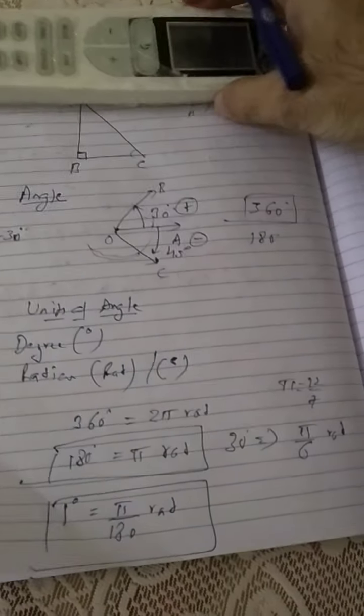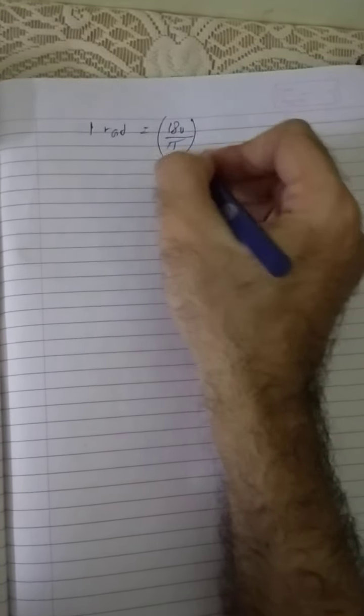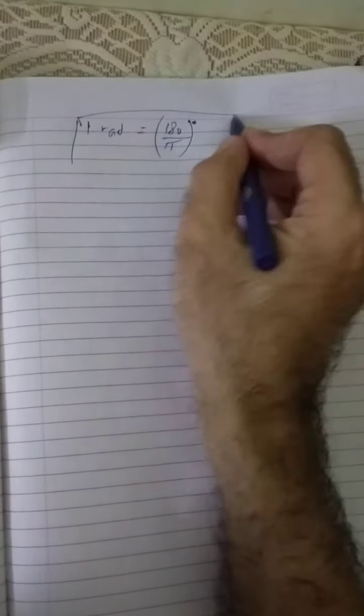Similarly, if you have radian to degree, so 1 radian will become what? 180 by π degrees. So this is how you can go further.